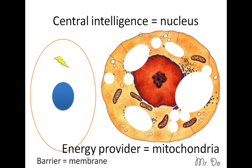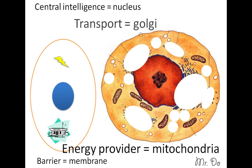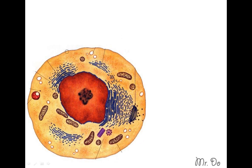The more mitochondria you have, the more energy you can get from your cell. Next we're going to need something that will transport stuff in and outside the city — kind of like a post office or truck delivery. Inside the cell it's called the Golgi, and that's the thing on the far right.